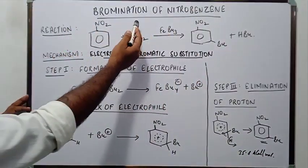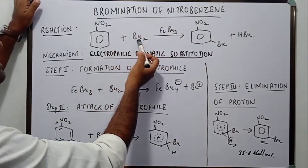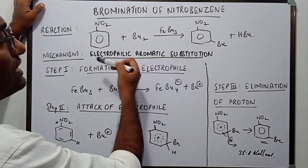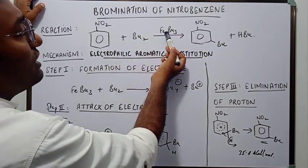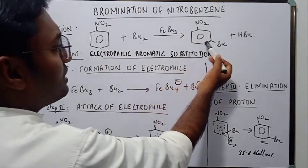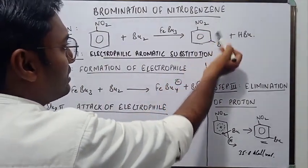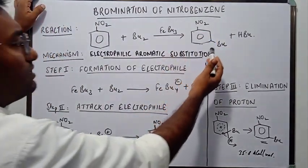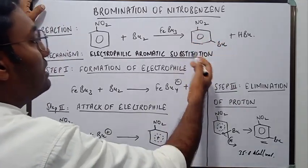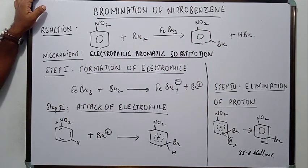Bromination of Nitrobenzene involves the Bromination of Nitrobenzene in the presence of a Lewis Acid Catalyst. Here I have chosen FeBr3 as the Lewis Acid Catalyst. The product that is formed is Metabromonitrobenzene. To understand why the product formed is Metabromonitrobenzene let us look at the mechanism of the reaction.